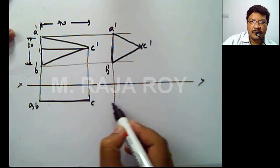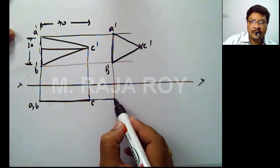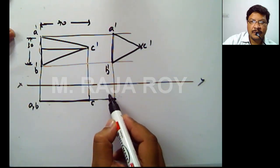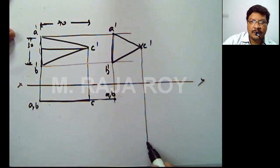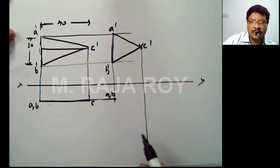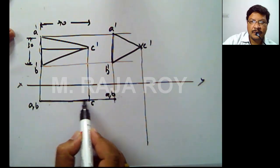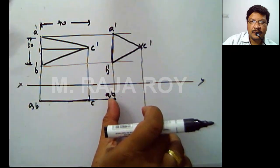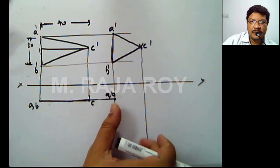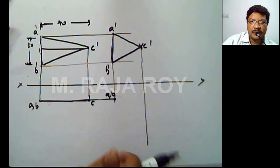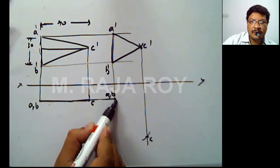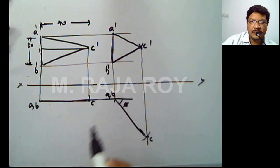Now from this front view you have to draw the top view. Points A' and B' project down directly. Point C will lie on its projector at some distance. To get that distance, the true length 70 is known — when you tilt the surface, 70 makes some angle, but the true length is seen in the top view. So take 70 as radius with A as center and B as center and draw arcs; their intersection gives point C. The angle phi shown is the angle the surface makes with VP.